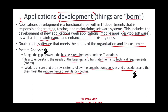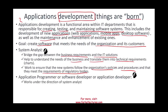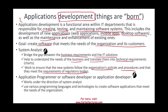Once we have the blueprint from the system analyst, we give it to the programmer — also called software developer, application developer, or application programmer. They work under the direction of the system analyst and use programming languages such as C, C++, and Java, along with technologies like compilers, to create software applications that meet the needs of the organization. Usually they do this in a sandbox — meaning not in a live situation — so the initial work is done in a non-live environment.